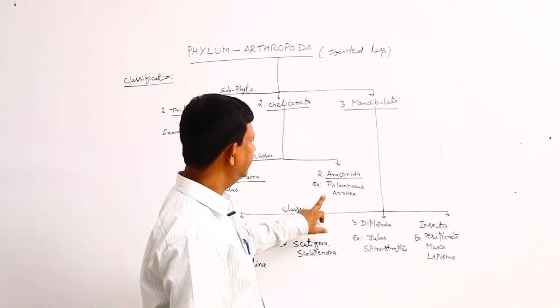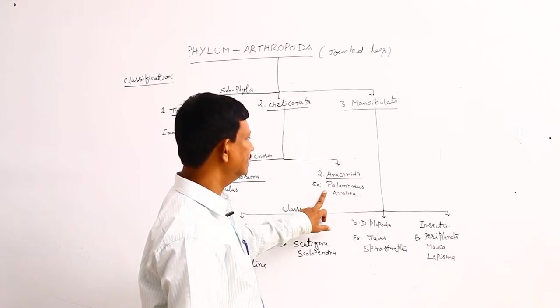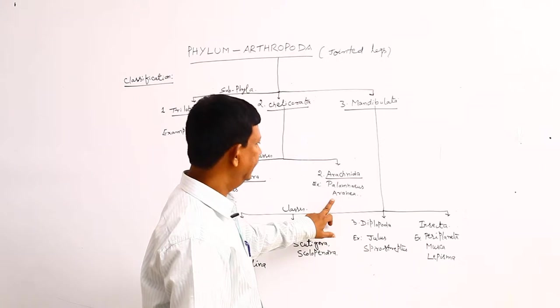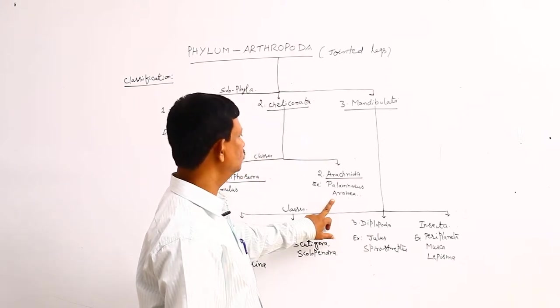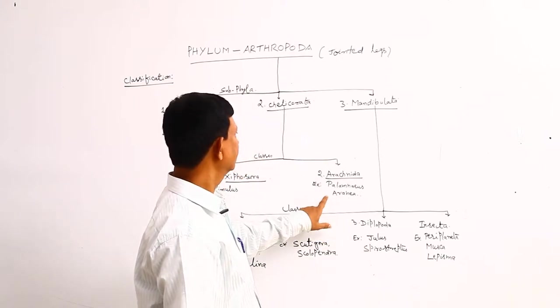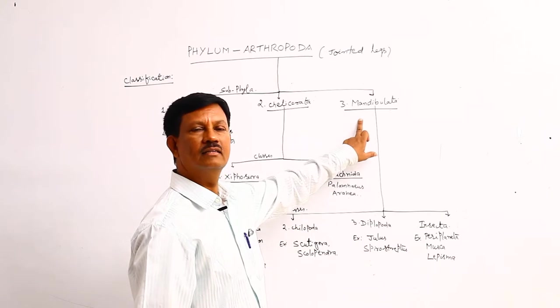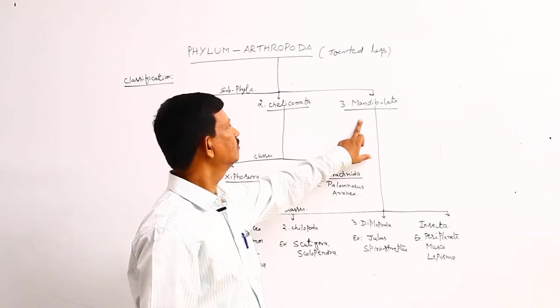Arachnida includes many examples: one is the Palamnius and Arinia. These are two examples that come under this class. Third sub-phylum is the Mandibulata.